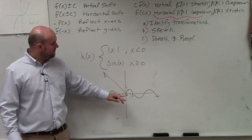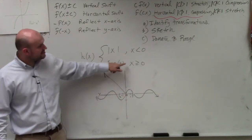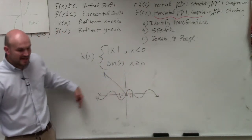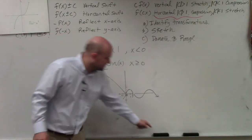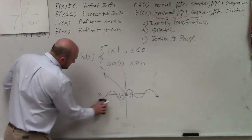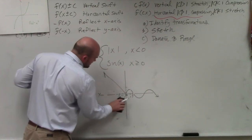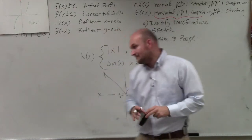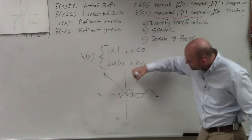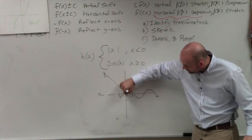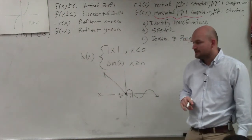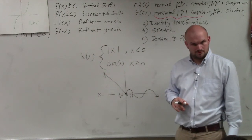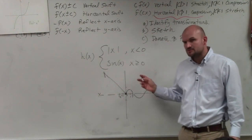This part says sine of x, but only for values that are greater than or equal to zero. That means all the negative x values are not within the constraints, so I'm going to erase the negative portion of the sine graph. Since it says greater than or equal to, I need to fill that dot in — and that's what your graph will look like.